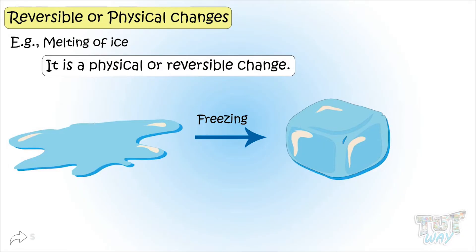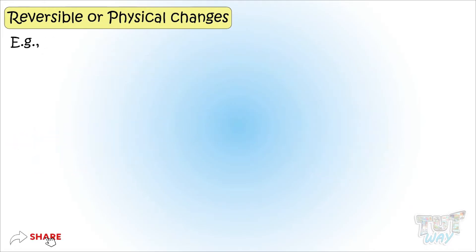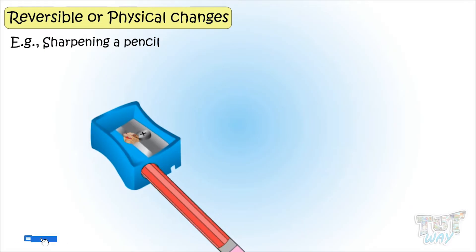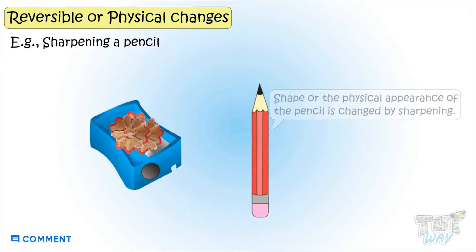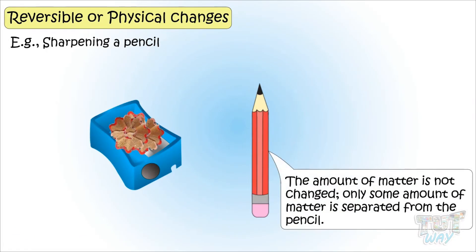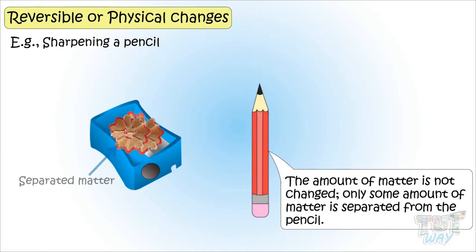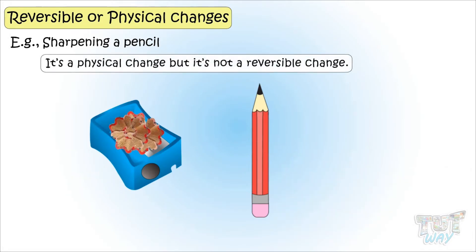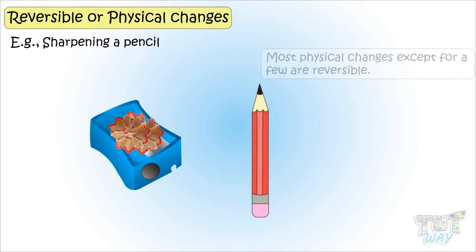Now let's have another example: sharpening a pencil. If a pencil is sharpened, only its shape is changed, or the physical appearance of the object is changed. Also, the amount of matter is not changed — only some amount of matter is separated from the pencil. So it's a physical change. But it's not a reversible change. Remember, most physical changes are reversible, but not all physical changes are reversible.